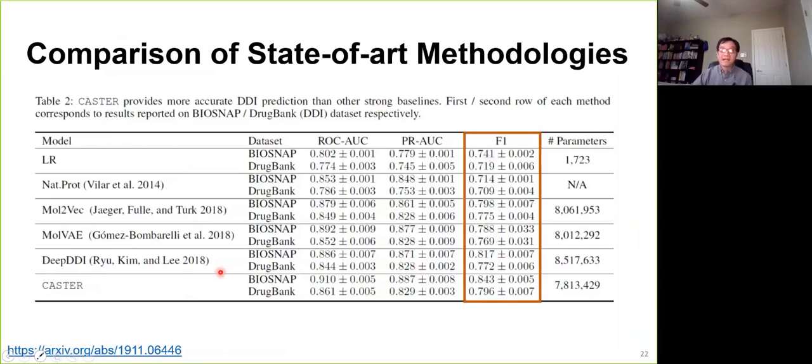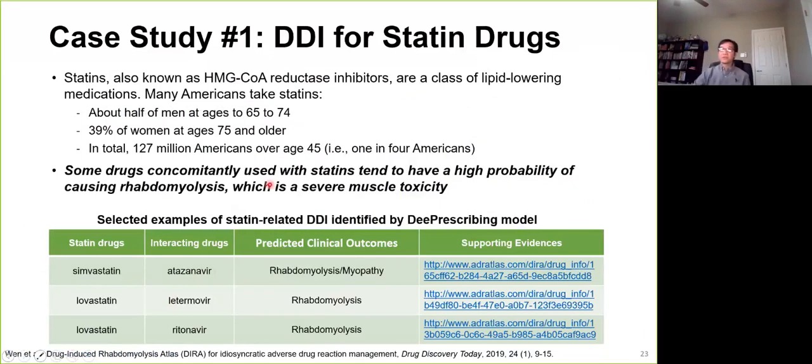And then I'll give you two examples of real-world applications of our models. First one is drug-drug interaction for statin drugs. Statin drugs are a class of lipid-lowering medications. I think they're popular. Many Americans take statin drugs, especially about half of the men at the age of 65 to 74, and 39% of women at the age of 75.